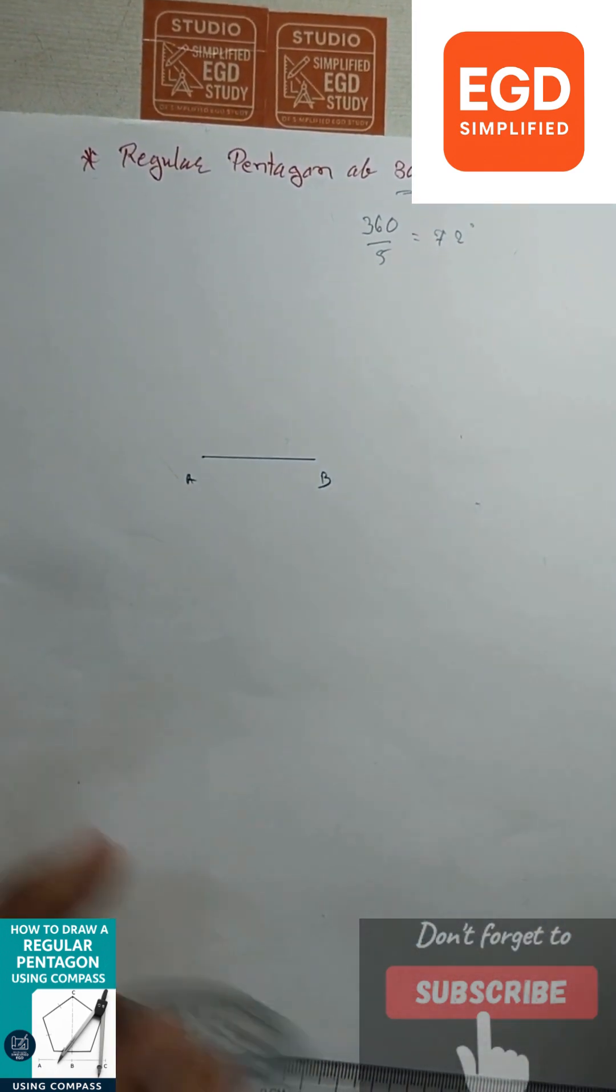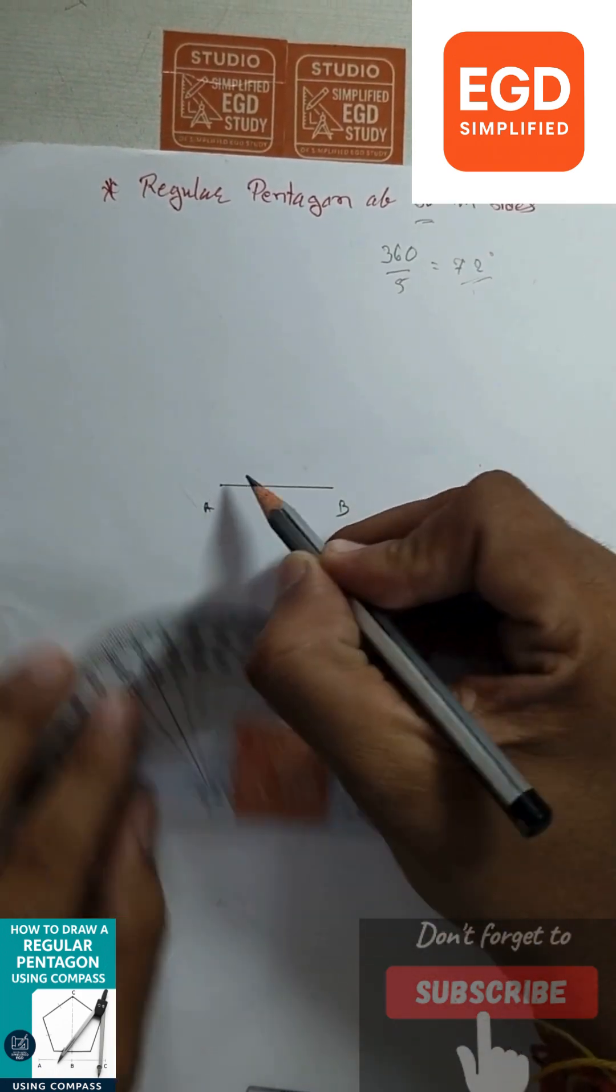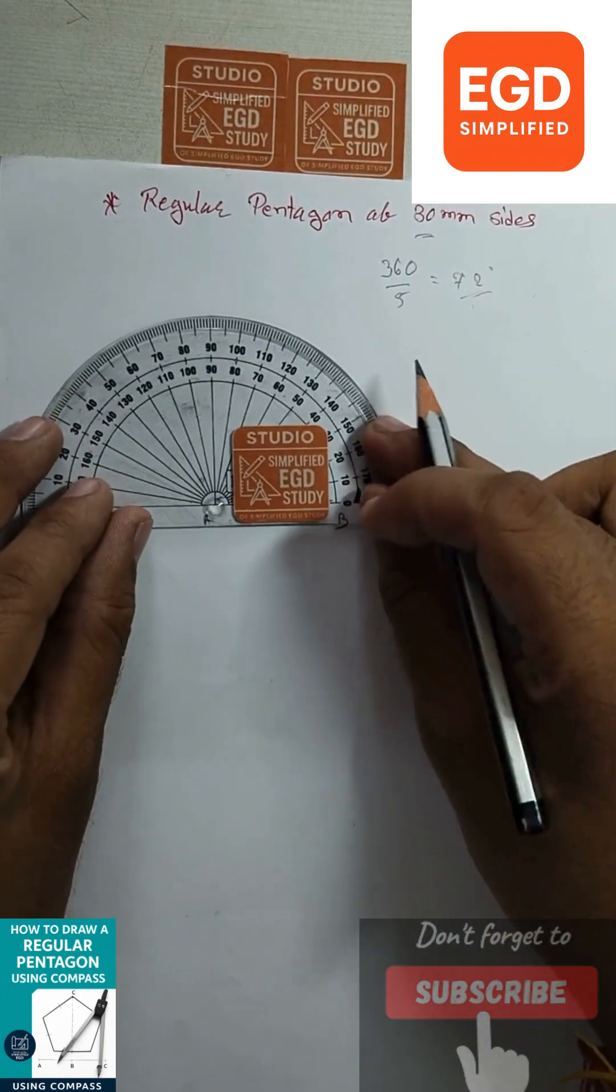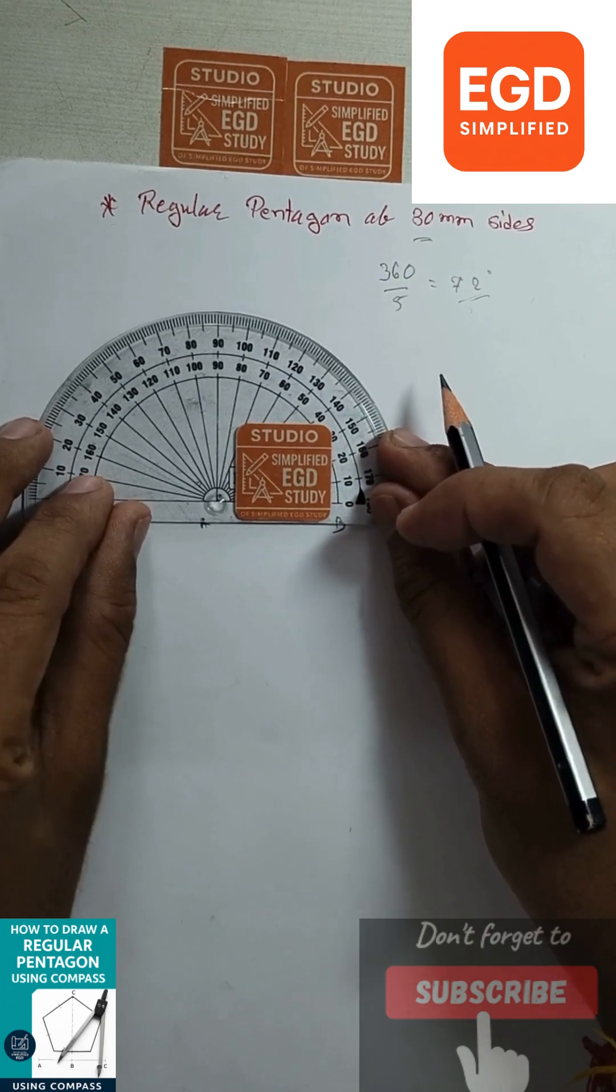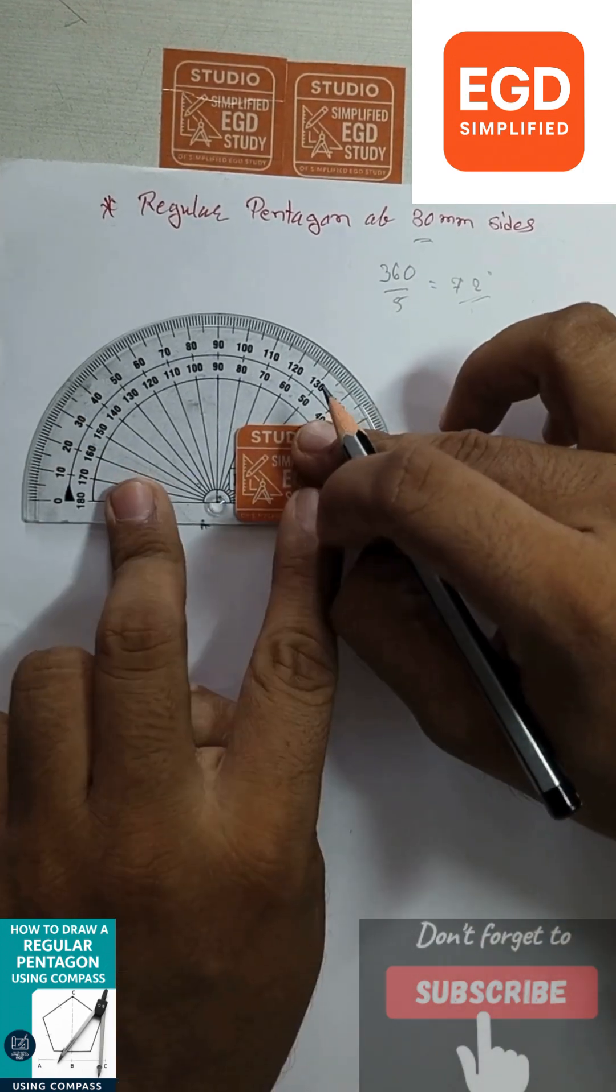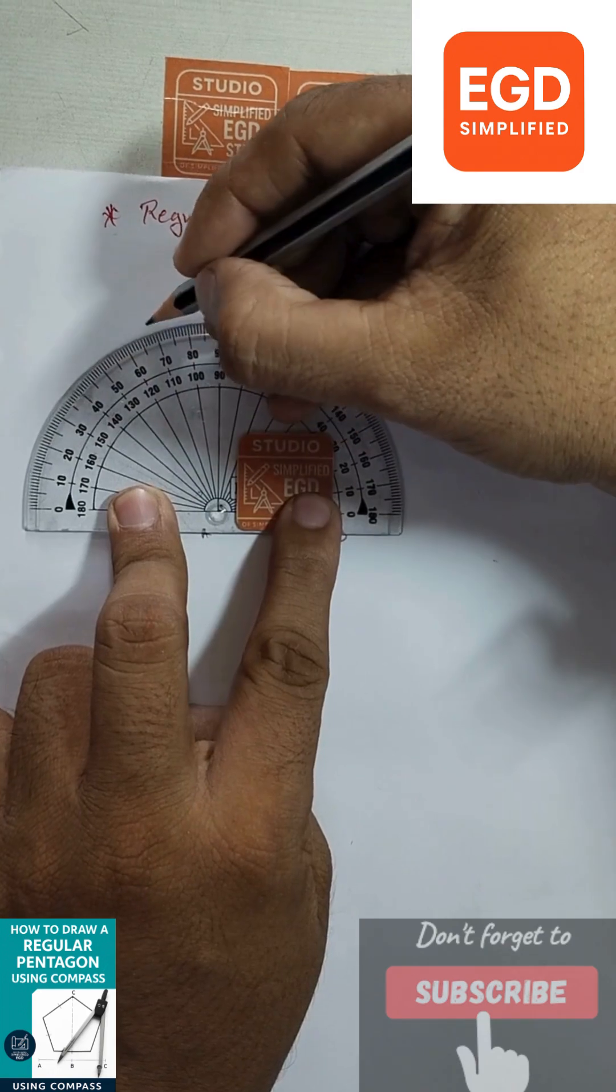Now, here we have derived 72 degrees. So 72 degrees will be from this outer side. Align the line, align the point A. Measure 72 degrees from this side.